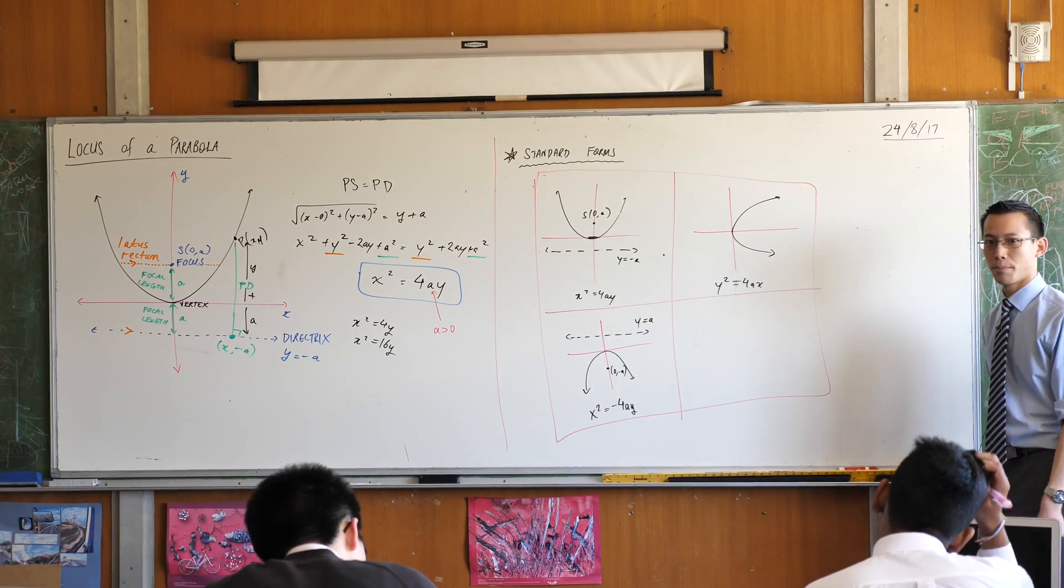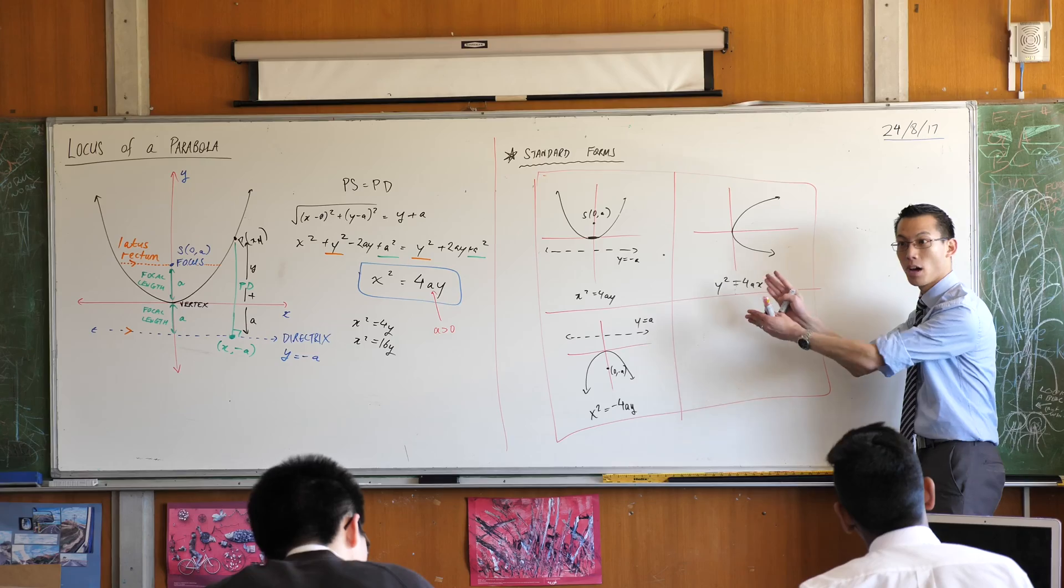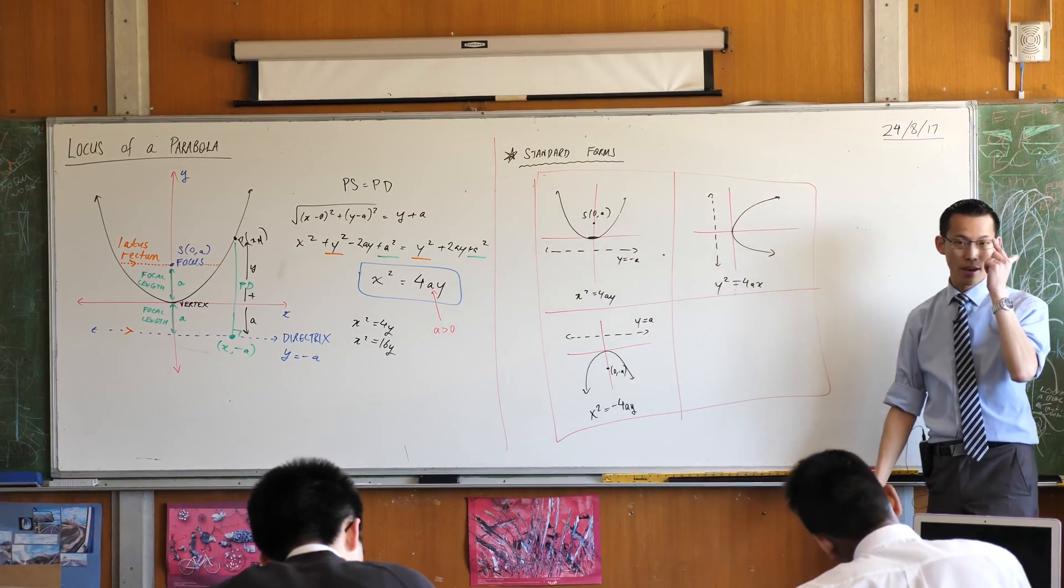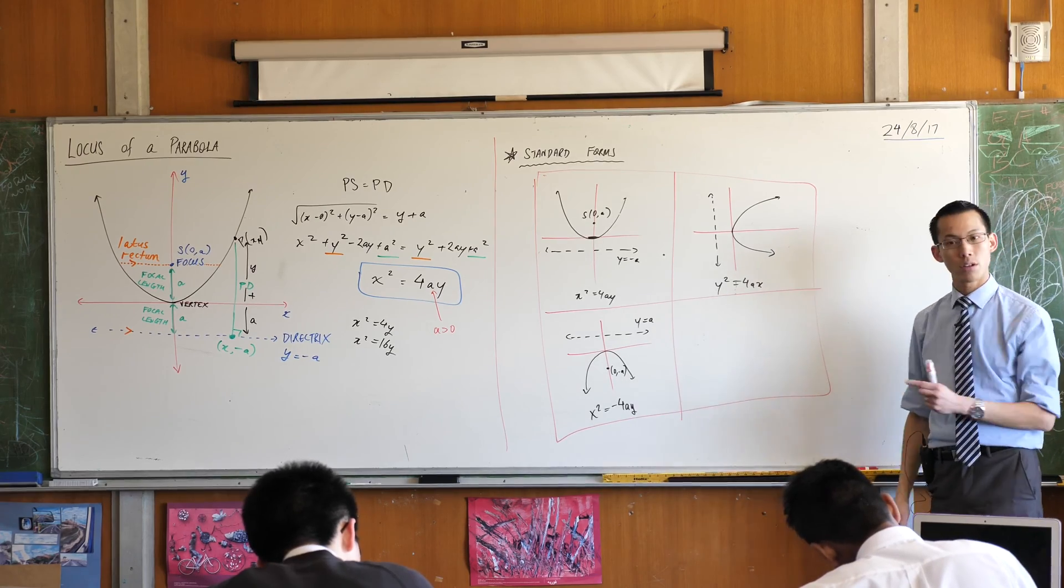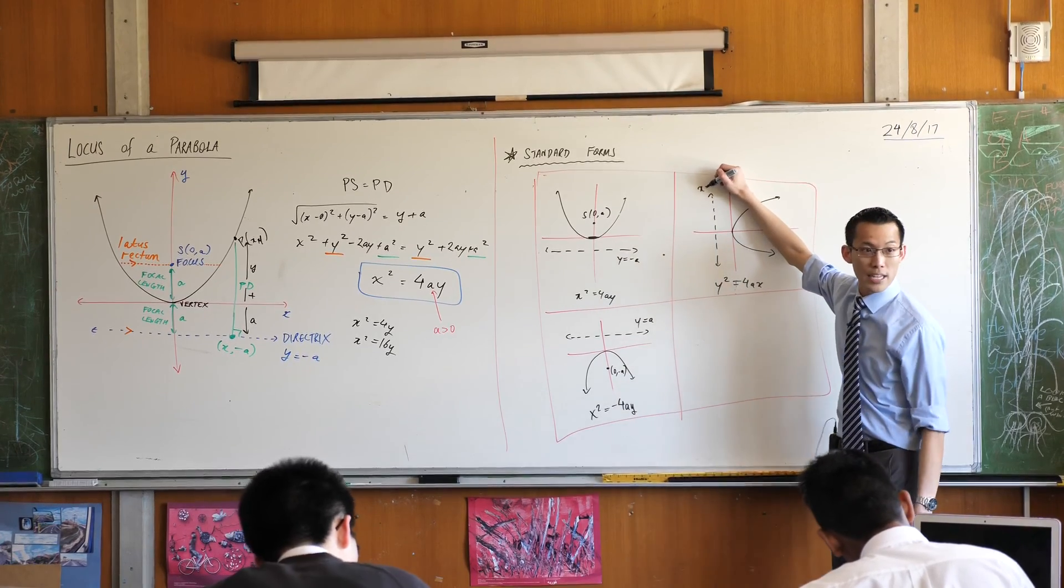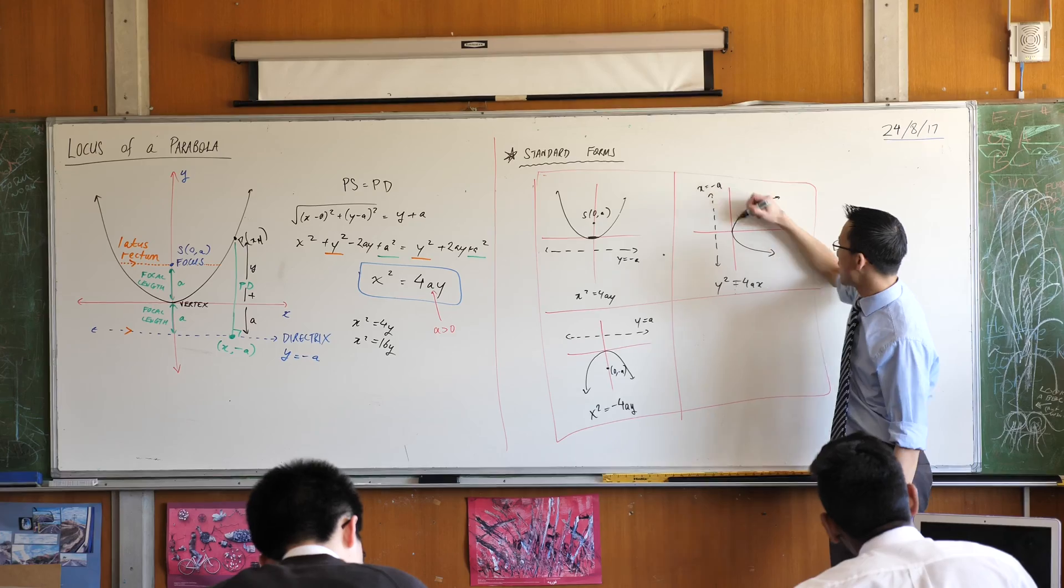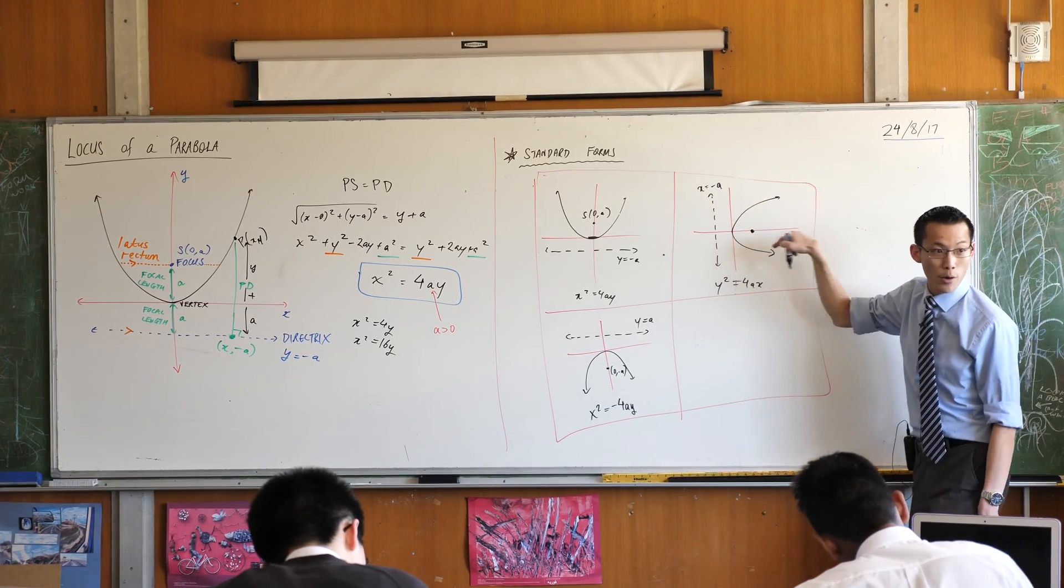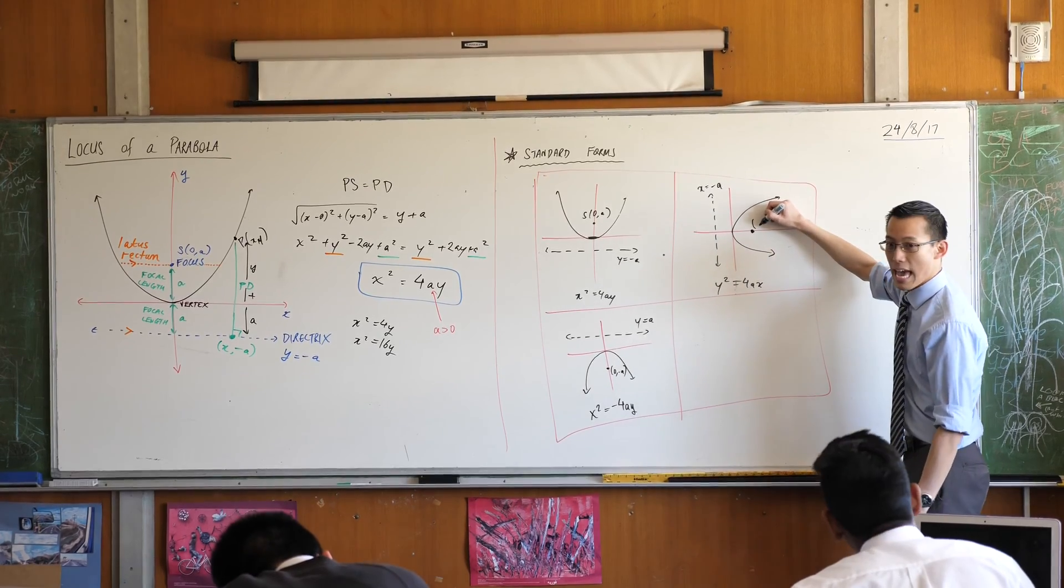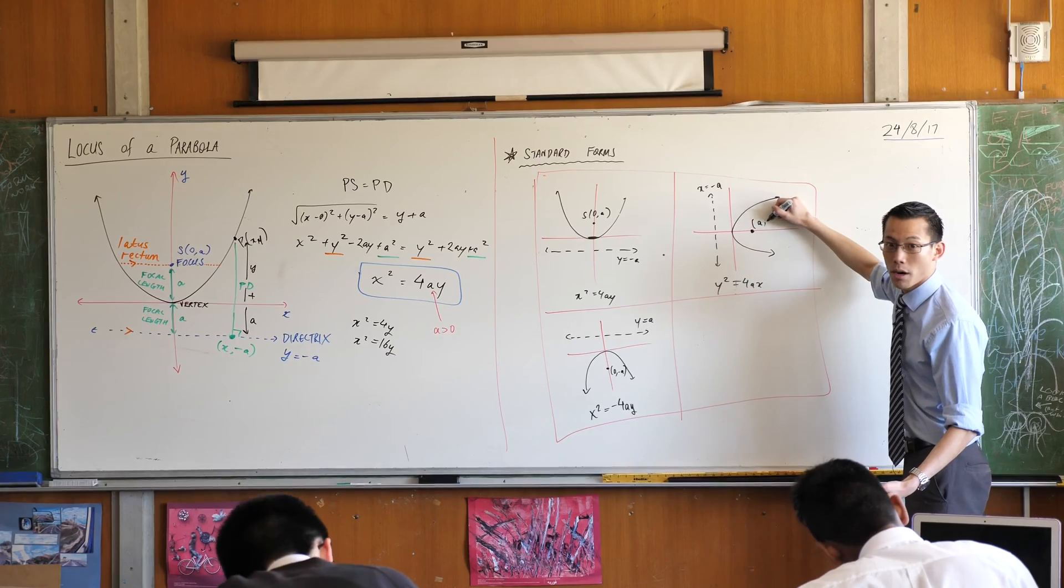Where's the directrix going to be? The directrix is what pushes the parabola away. So I'm going to position it over here on the left, okay? It's a vertical line, not a horizontal line. So it's not going to be y equals, it'll be x equals. And being on the left hand side of the Cartesian plane, it must be minus a. That of course positions your focus over here, but because it's going left right instead of up down, it's going to be the x-coordinate that changes. So it's going to be a comma zero.